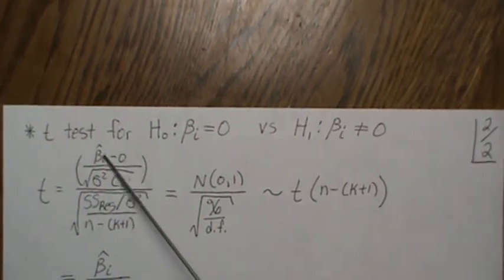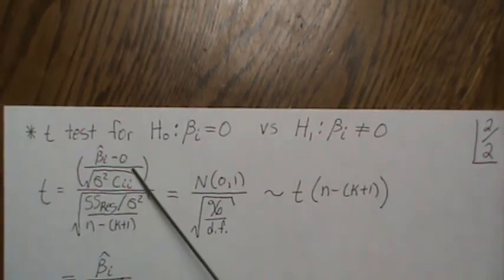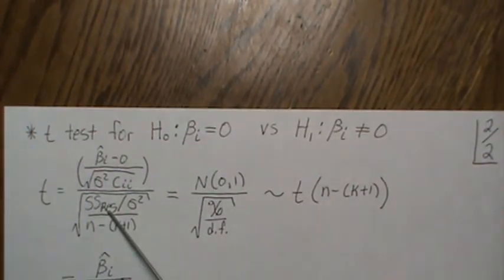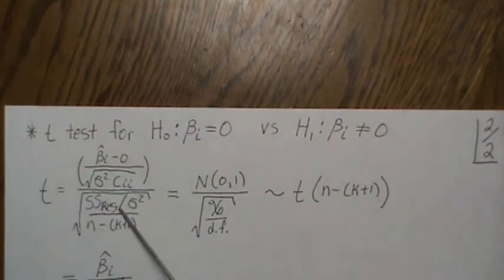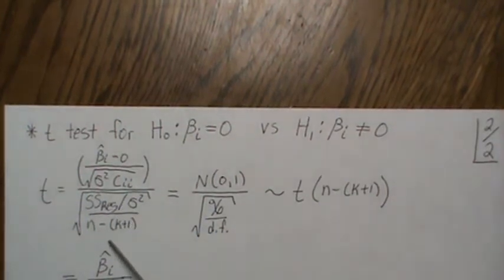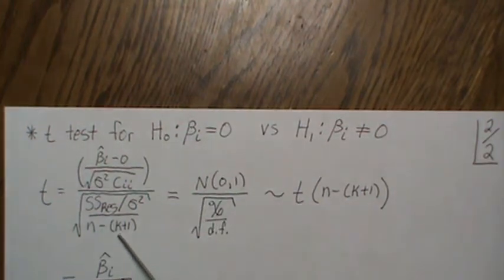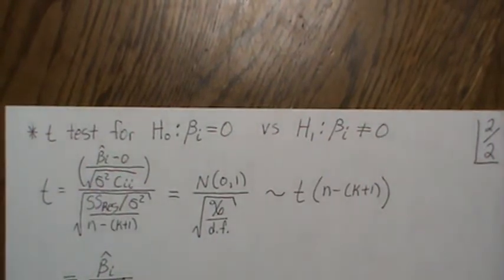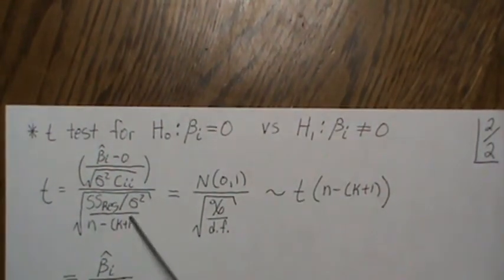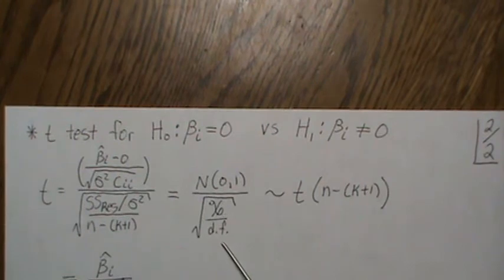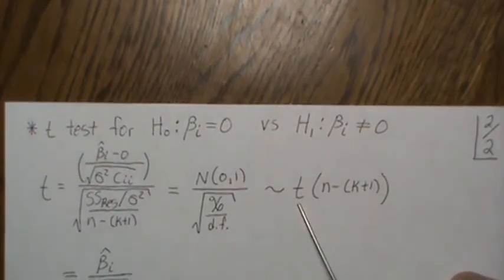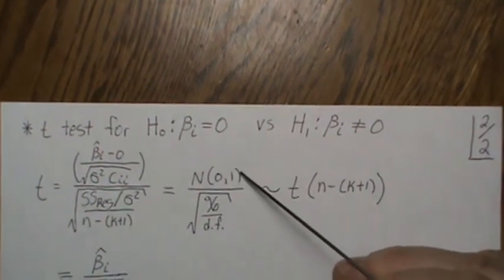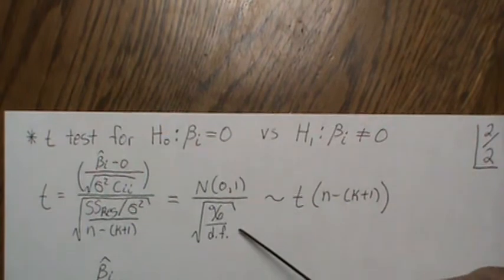This piece here is the standard normal distribution we just developed. The sum of squares residual divided by sigma squared follows a chi-squared distribution with n minus k plus one degrees of freedom. This piece is an unbiased estimate for sigma squared. We have a standard normal and a chi-squared divided by its degrees of freedom - that's what we define as a t-distribution with n minus k plus one degrees of freedom. This is under the assumption that the numerator and denominator are independent.